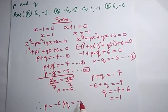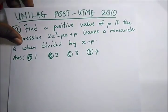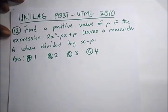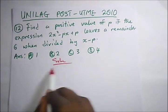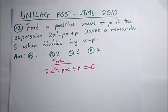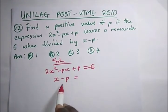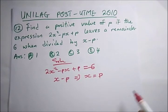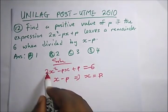The next question says: find a positive value of P if the expression leaves a remainder of 6 when divided by x minus P. Since it leaves a remainder of 6, we use the remainder theorem: 2x² − Px + P = 6 when x = P. So substitute x = P everywhere in the expression.